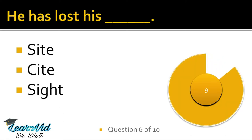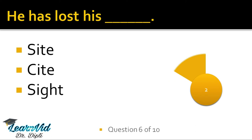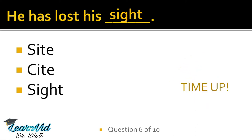He has lost his dash. The correct option is S-I-G-H-T, sight. Now the first option, S-I-T-E, means a point or location — for example, this is a good site for a school. Or internet site — in that also we use S-I-T-E. Second is C-I-T-E, which means to give a reference or example to support or prove a point — for example, she cited two examples to support her answer. And the last one is sight, which means eyesight — dekhna. He has lost his sight.